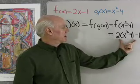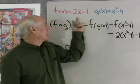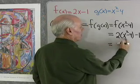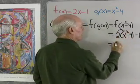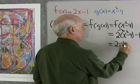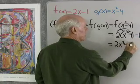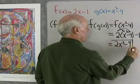There I've done the same thing to x squared minus 4 that I do to anything inside the parentheses. The rest is just a matter of simplifying. I'll multiply here. 2 times x squared is 2x squared. 2 times negative 4 is negative 8.